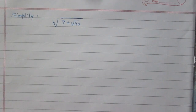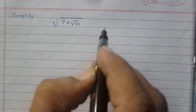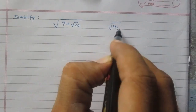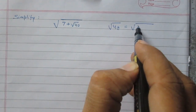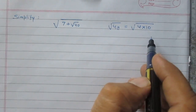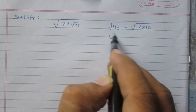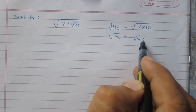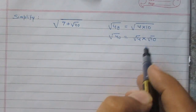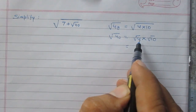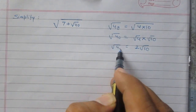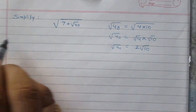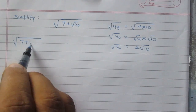Simplify square root of whole 7 plus square root 40. Let us consider square root of 40. 40 can be written as 4 times 10, so square root of 40 is equal to square root of 4 multiplied by square root of 10. We know that square root of 4 is 2, so it is 2 times square root of 10.